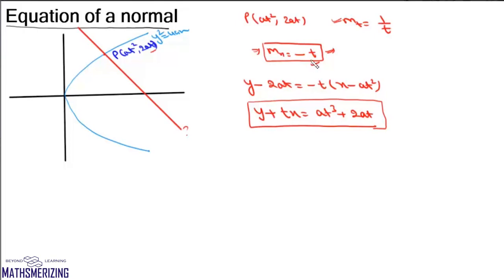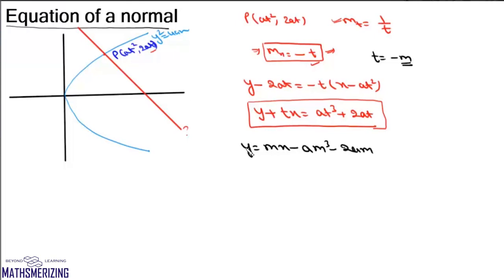We know that t = -m, where m is the slope of the normal. Replacing t with -m, we can write the equation as y = mx - am³ - 2am. So the equation of the normal to the parabola in terms of the slope of normal is y = mx - am³ - 2am, and in terms of parameter t it is y + tx = at³ + 2at.